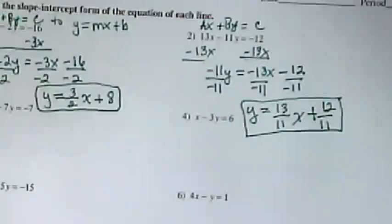This means the y-intercept 12 over 11 would be like 1 and 1 eleventh. It's really, really close to 1.